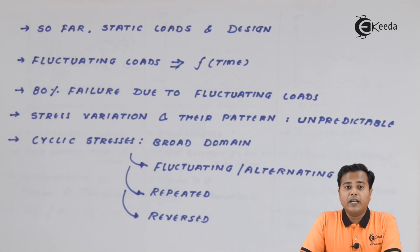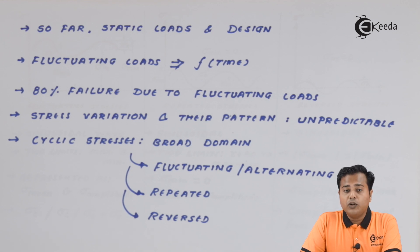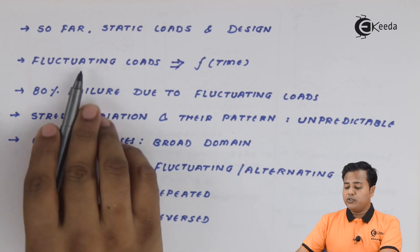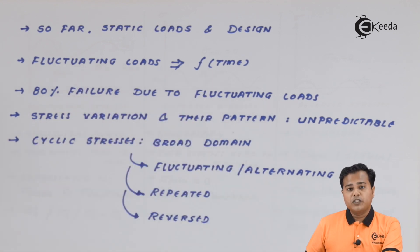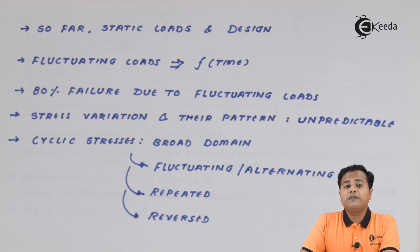So far we know there are static loads, and we design accordingly. In the previous chapter on static load design, we designed components considering only static loadings — bending loads, tensile loads, axial loads, and so on. But in real life, loads may change with time. For one instance a load may be 10 kilo-Newtons; for the next it may increase or decrease. Fluctuating loads are a function of time — their magnitude, nature, and direction may change. It was observed that 80 percent of failures in industries are caused by fluctuating loads, not static loads, making this area essential.